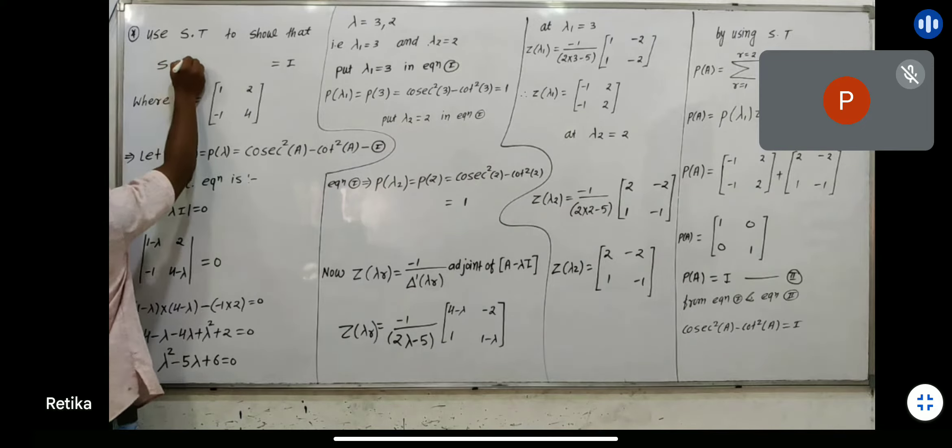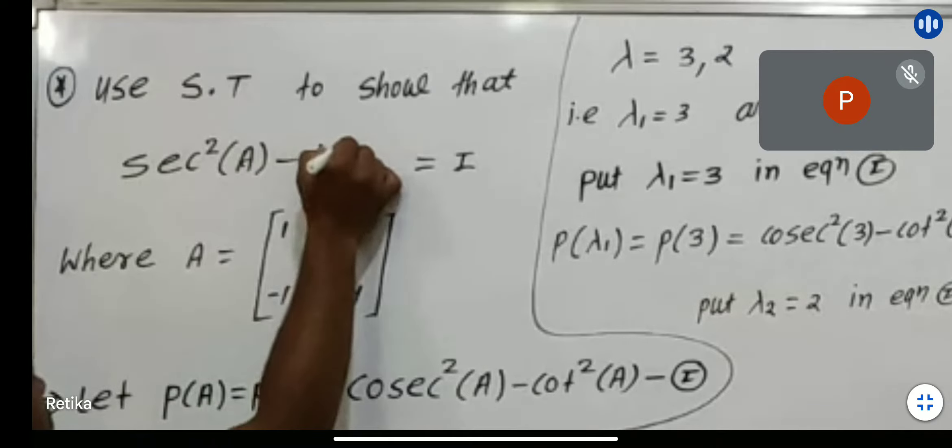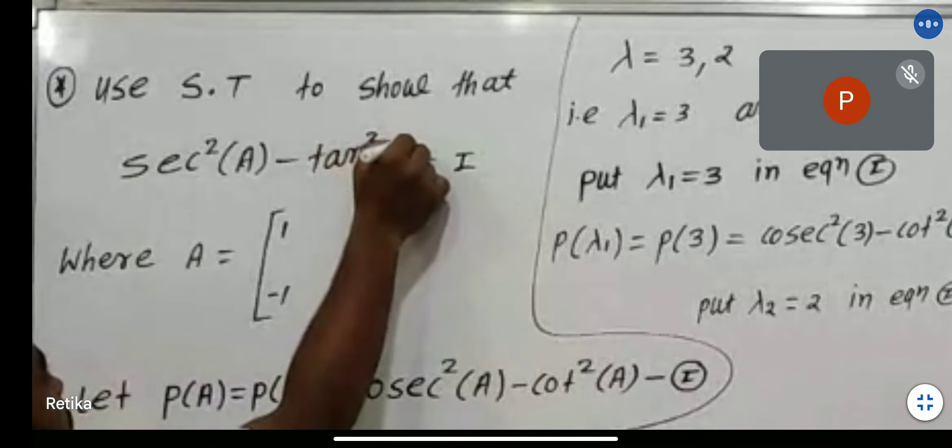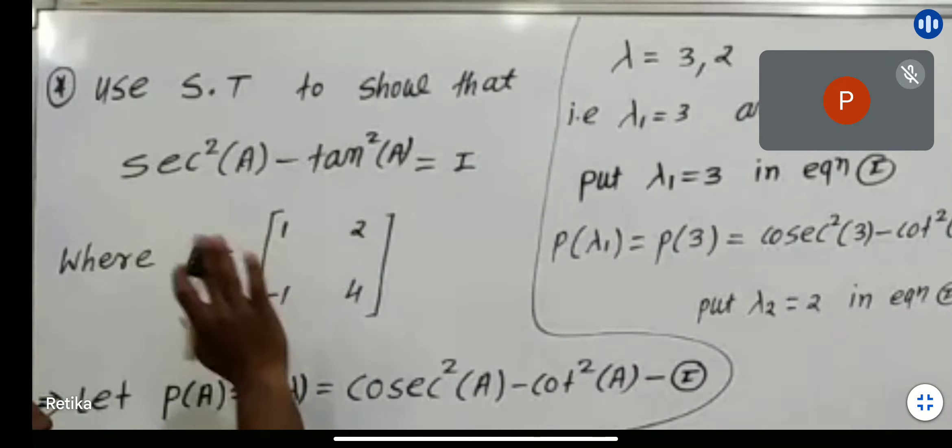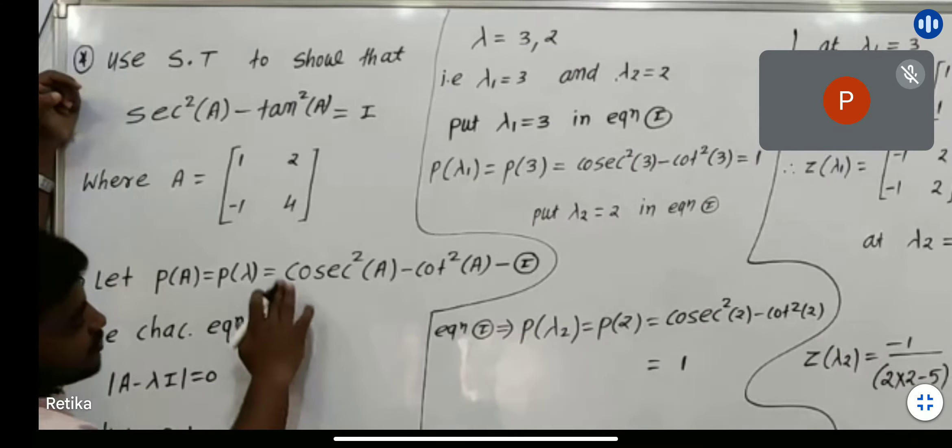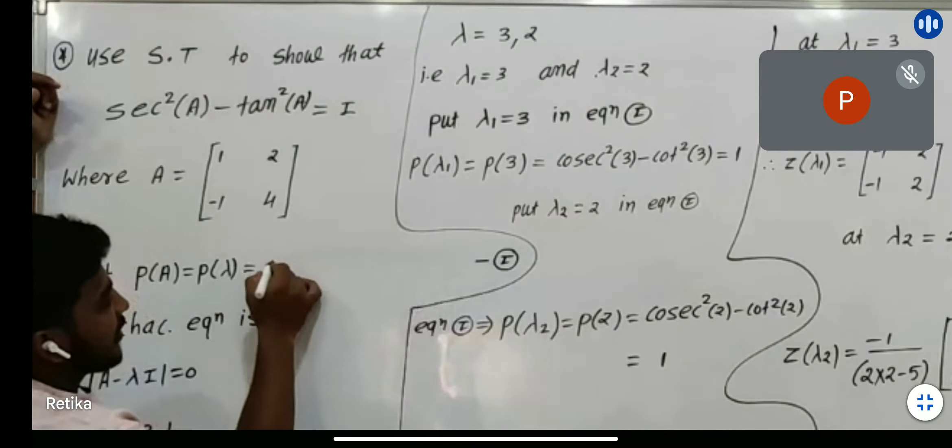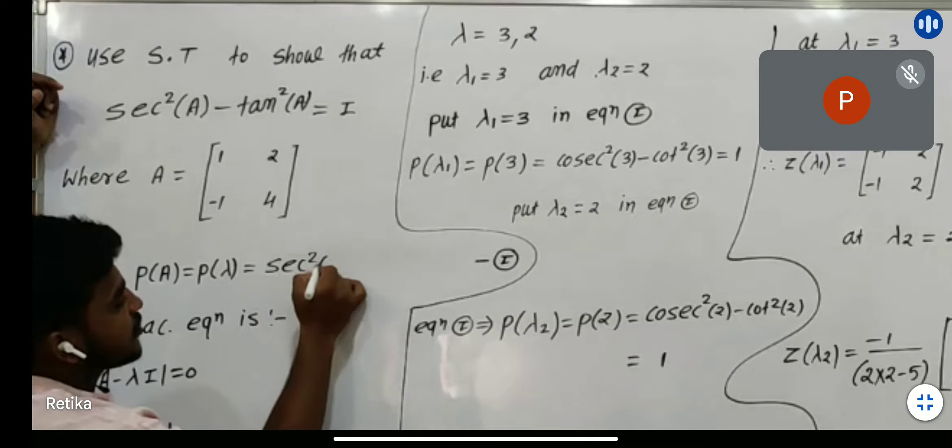Sec square a minus tan square a equals i. The question is the same. How do you consider p of a, p of lambda equals to sec square a minus tan square a?